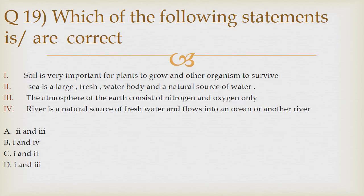Question number 19. Which of the following statements is or are correct? 1. Soil is very important for plants to grow and other organisms to survive. 2. Sea is a large, fresh water body and a natural source of water. 3. The atmosphere of the earth consists of nitrogen and oxygen only. 4. River is a natural source of fresh water and flows into the ocean or another river. The correct answer is Option B — 1 and 4.